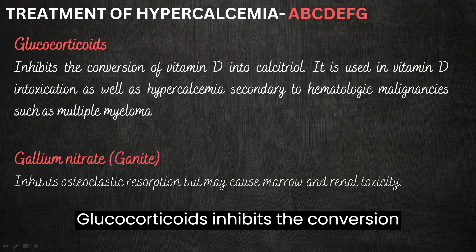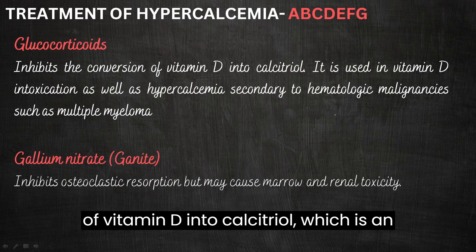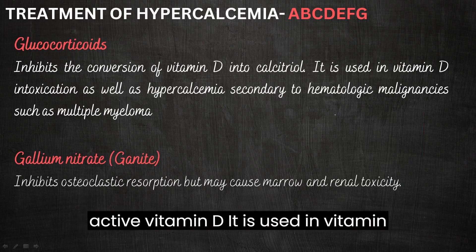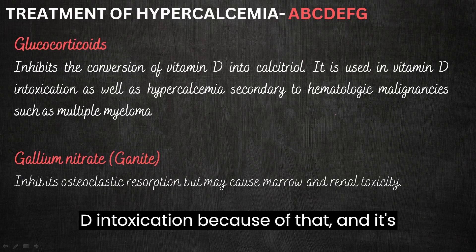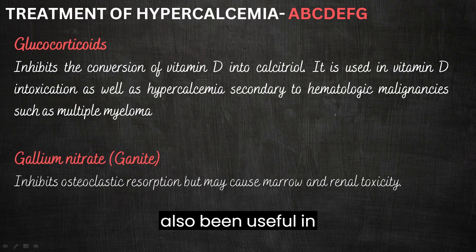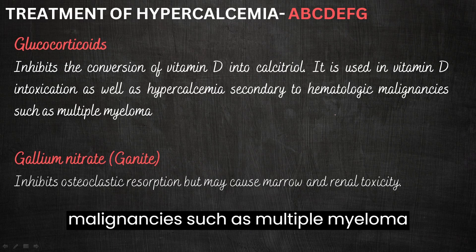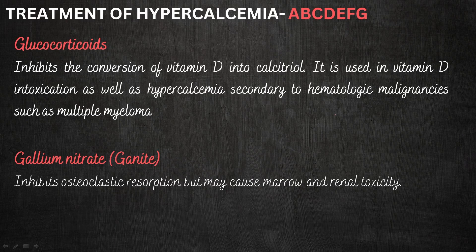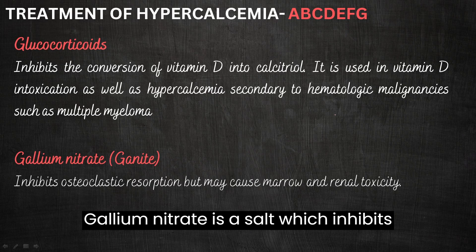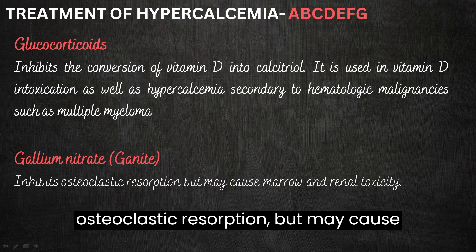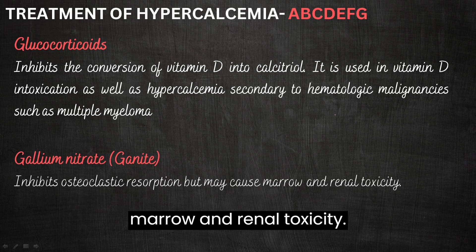Glucocorticoids inhibit the conversion of vitamin D into calcitriol, which is the active form of vitamin D. They are used in vitamin D intoxication and have also been useful in hypercalcemia secondary to hematologic malignancies such as multiple myeloma or lymphoma. Gallium nitrate is a salt which inhibits osteoclastic resorption but may cause bone marrow and renal toxicity.